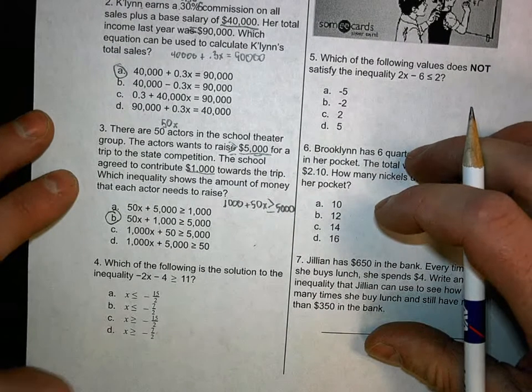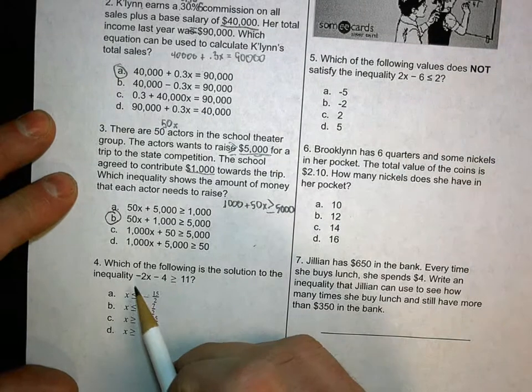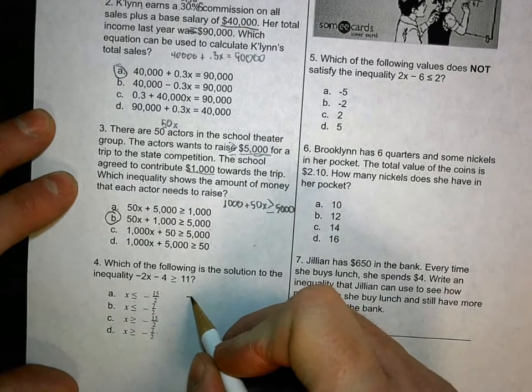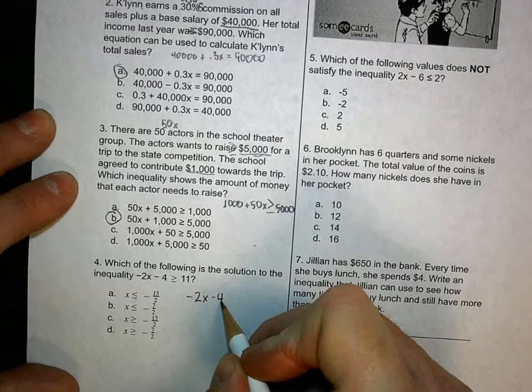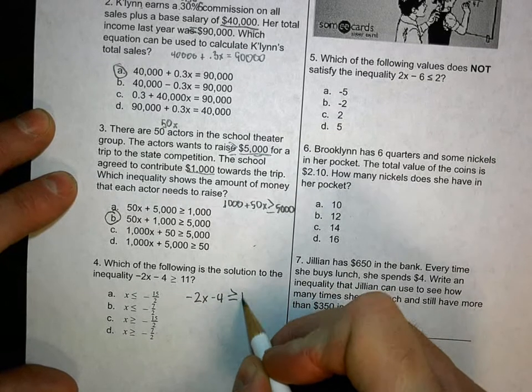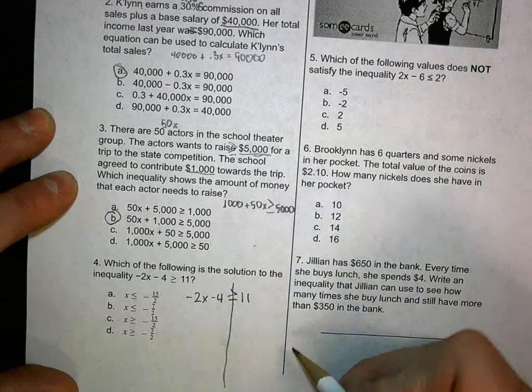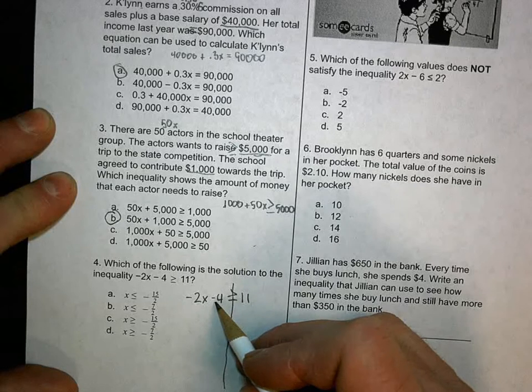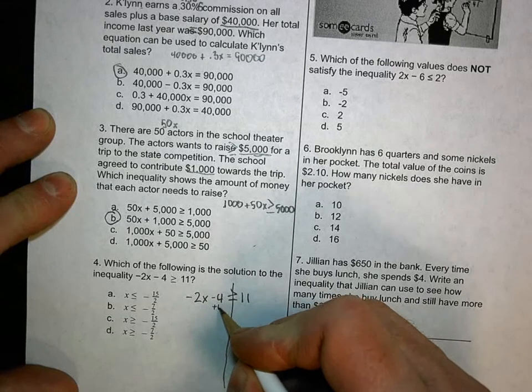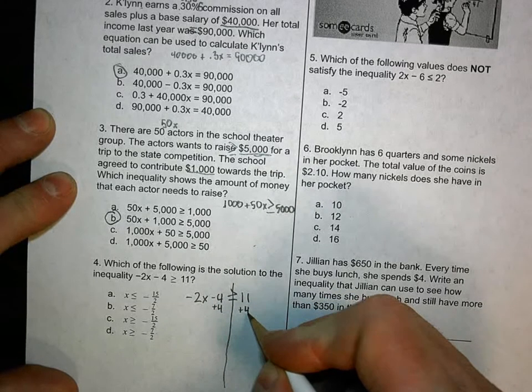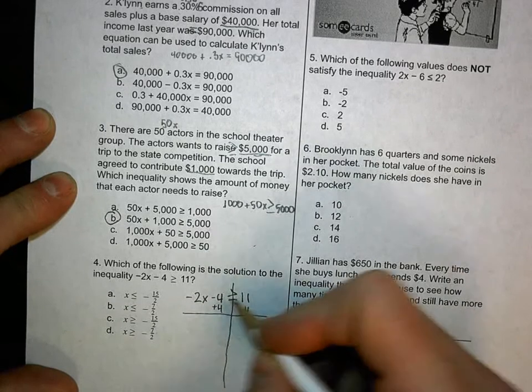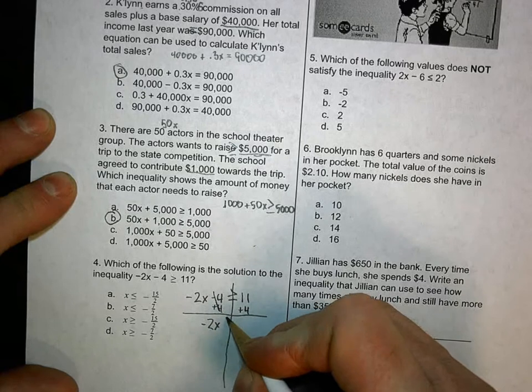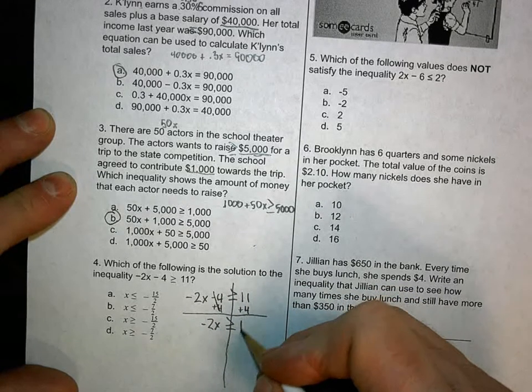All right, number four. Which of the following is the solution to the inequality negative 2x minus 4 is greater than or equal to 11? I'm going to write this down over here because I need more room. Minus 4 greater than or equal to 11. Now once I do that, I put my line straight down. I'm looking for whatever is being added to or subtracted from the number with the variable first, and that's negative 4. The opposite of that is positive 4. I add 4 to both sides. So this one goes away. I get negative 2x greater than or equal to 11 plus 4 is 15.